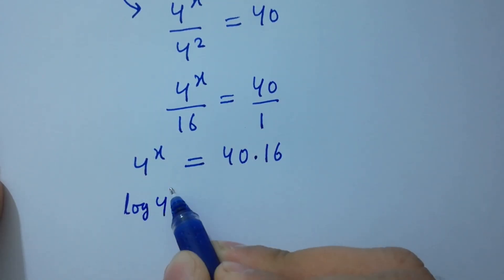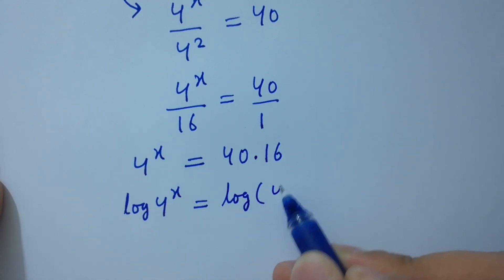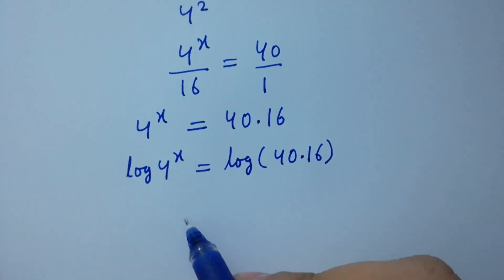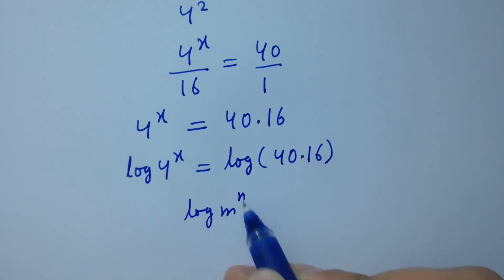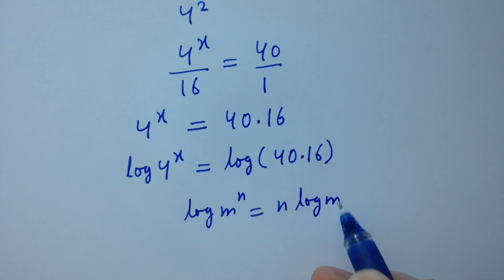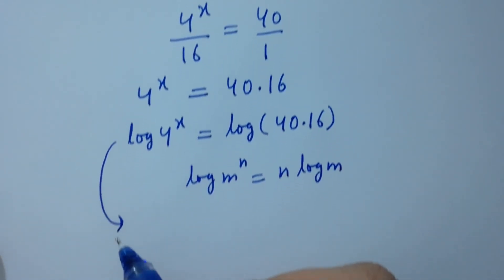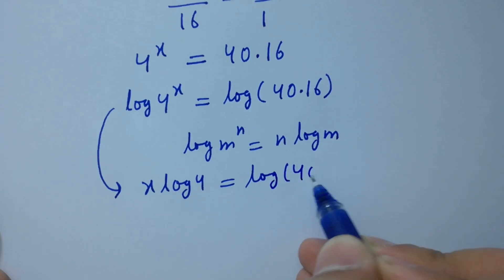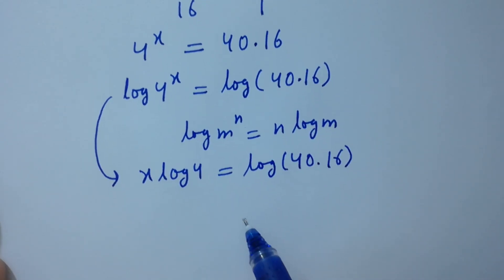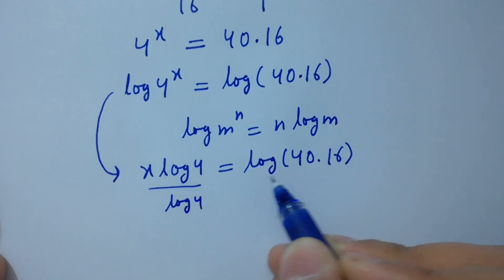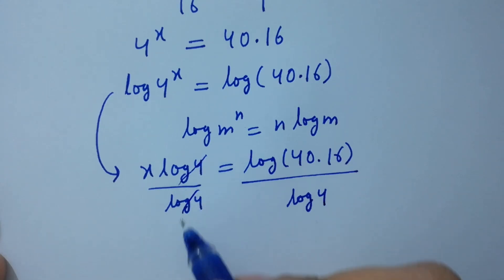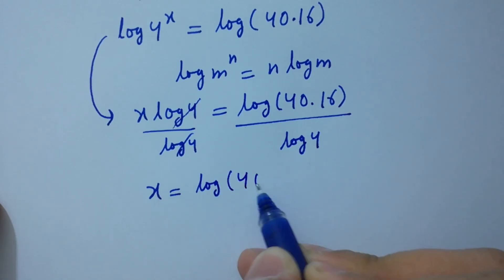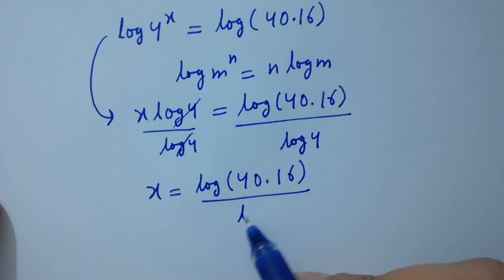Log of 4 to the power x equals log of 640. Using the rule log m to the power n equals n log m, we have x log 4 equals log 640. Dividing both sides by log 4, log 4 cancels, giving x equals log 640 over log 4.